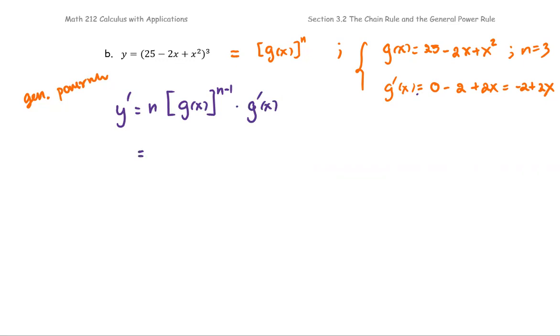N is 3 for this case. The g is 25 minus 2x plus x squared to the power 3 minus 1, that is the power 2, multiplied by the g prime, which is the quantity negative 2 plus 2x. And here is your answer or your form for y prime or the derivative of y with respect to x.